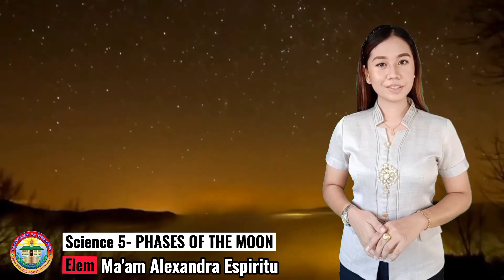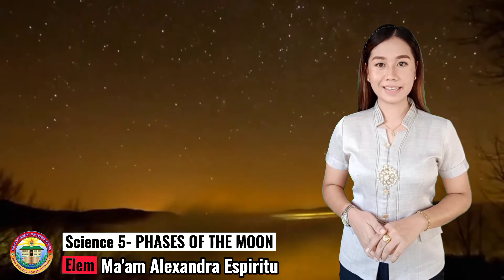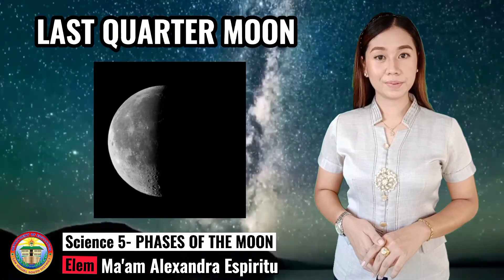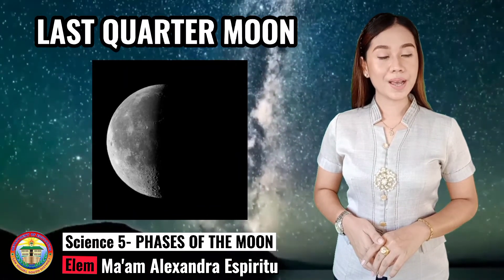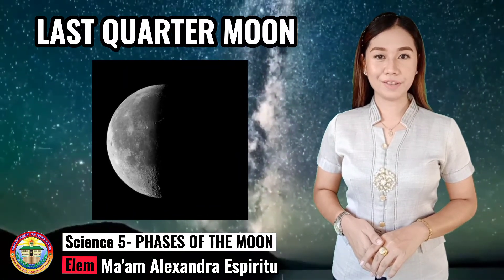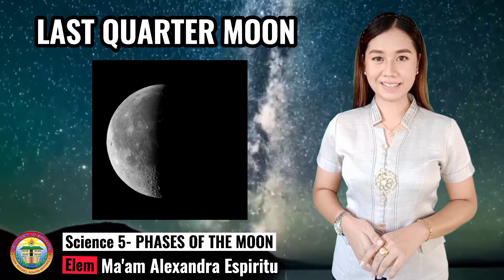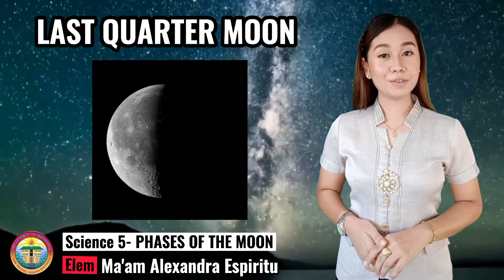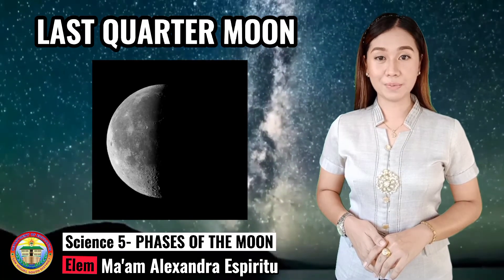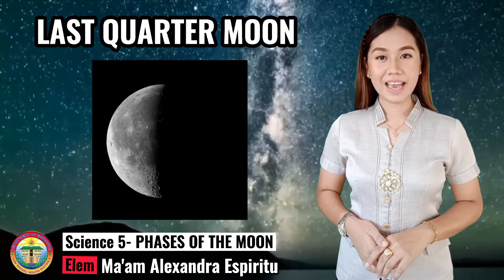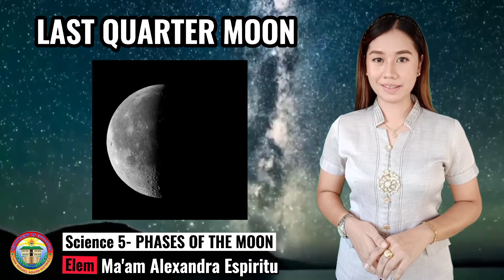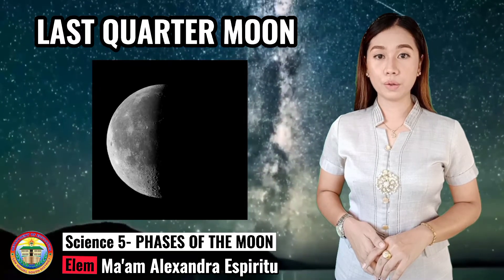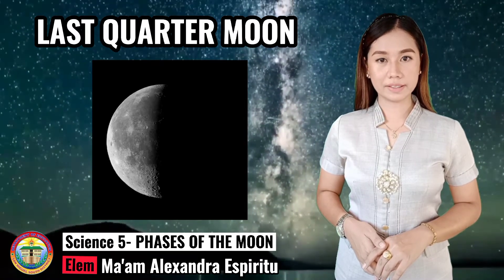After several days, the Last Quarter Moon will appear. The Moon is one half illuminated by the Sun. The left side of the Moon appears bright, and the right side of the Moon appears dark. It is also called the Third Quarter.